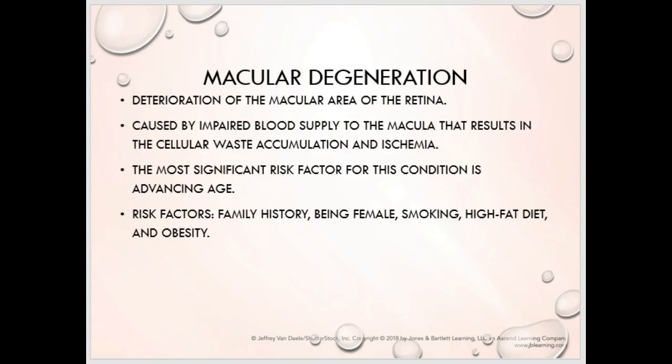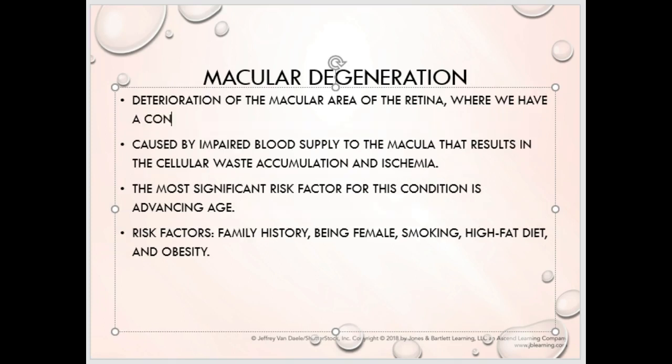Welcome back, we are in Chapter 14 Part 4 and we're moving into macular degeneration. I have a picture to show you where the anatomy of it is. The macula is an area on the retina where we have a concentration of cones — the color receptors. As we move out from the macula we get higher concentrations of rods, which help us with peripheral and dim vision. When we have degeneration of the macula, we lose that nice central clear color vision.